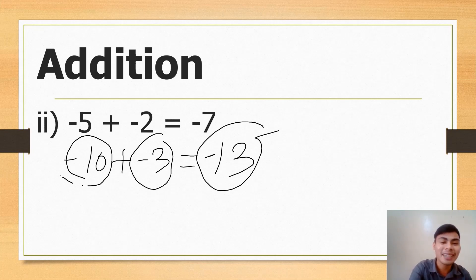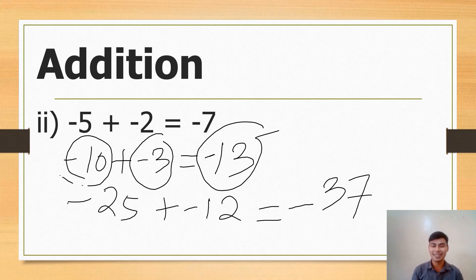So sa elementary teacher ko, regards to mga Mervoso, usually kung mga negative ang pinag-uusapan, utang daw yan. So kung may 10 ka na utang, 10 pesos na utang, at 3 pesos na utang, therefore may 13 pesos kang utang. At dahil utang nga yan, negative. So again, practice at home. Pause muna ang video. Negative 25 plus negative 12.